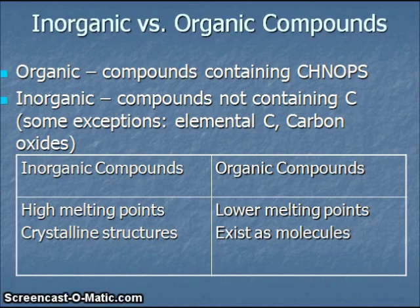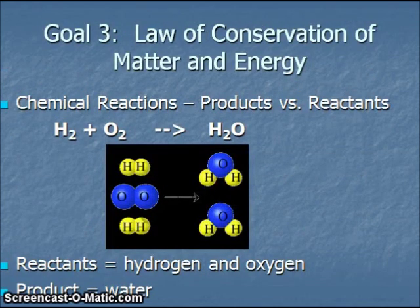As a general rule, inorganic compounds tend to have very high melting points because of the bonding present in these types of compounds. They also have crystalline structures. Organic compounds, as a general rule, tend to have lower melting points and exist as molecules. The melting point comparison, of course, there can always be some exceptions to this. These are general guidelines based on the two categories of substances.